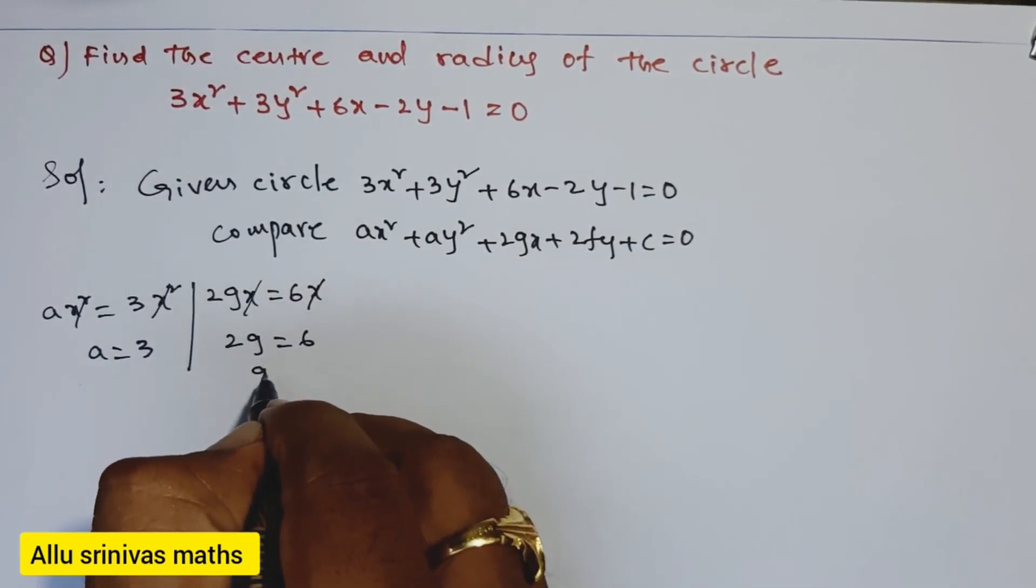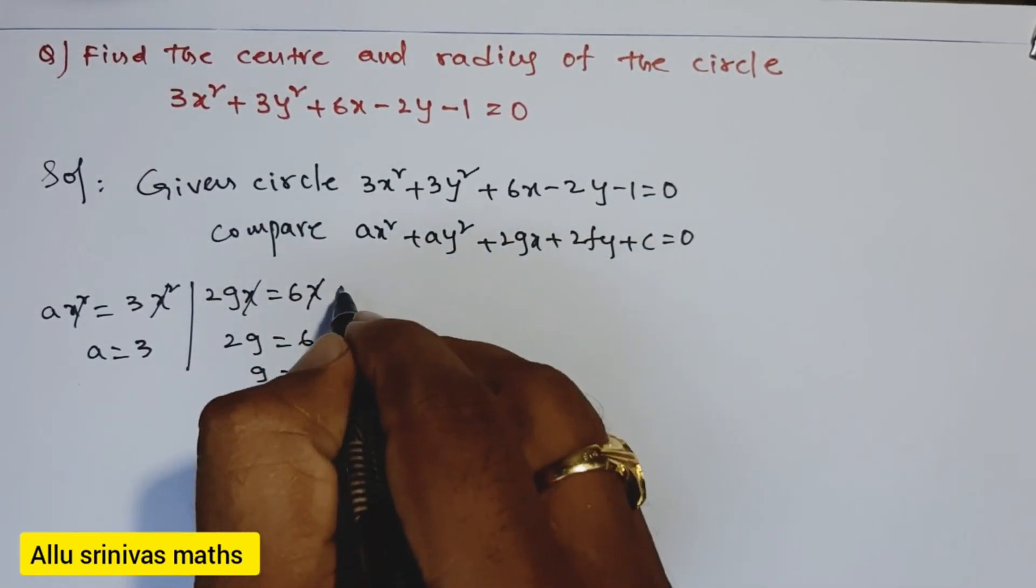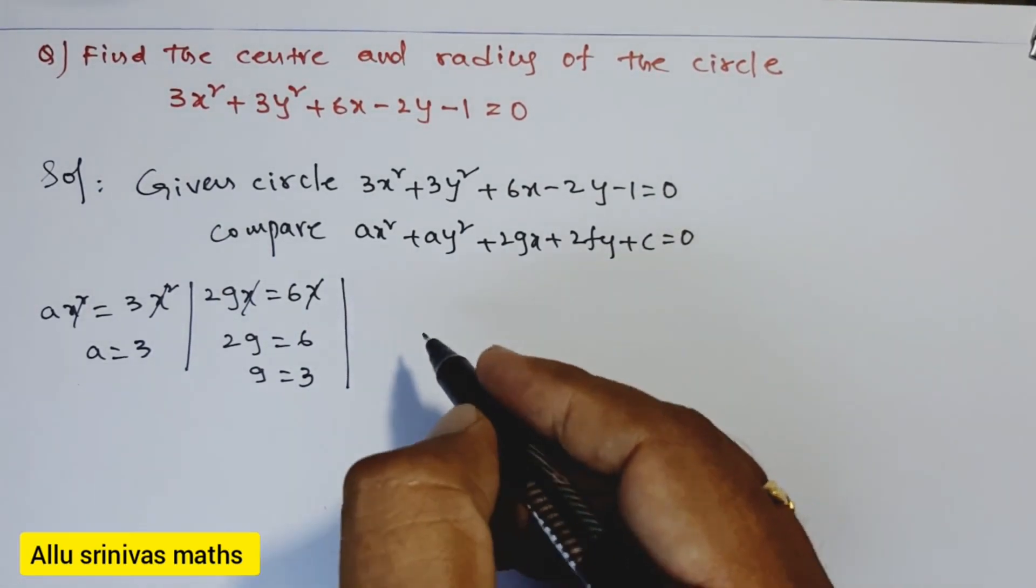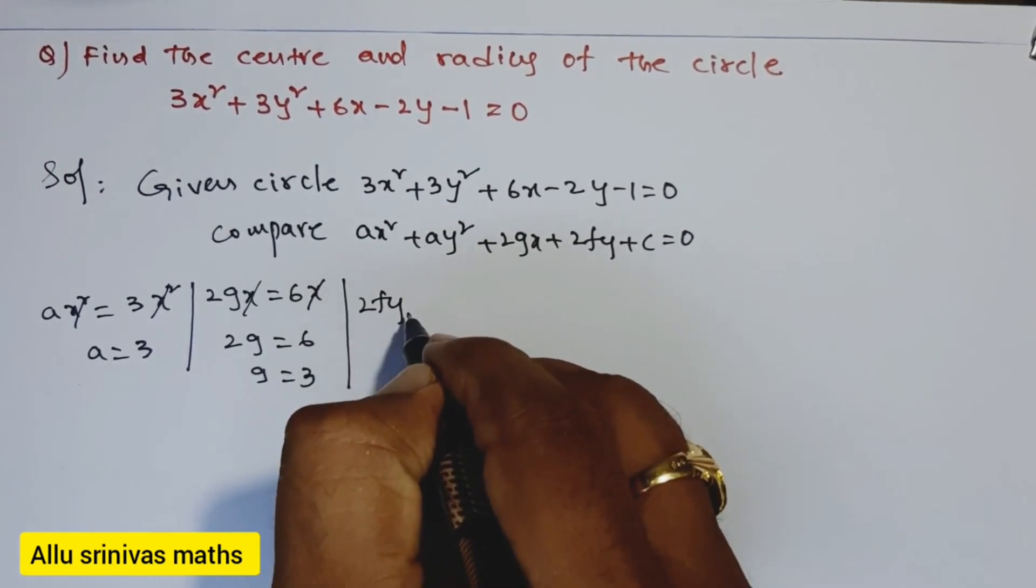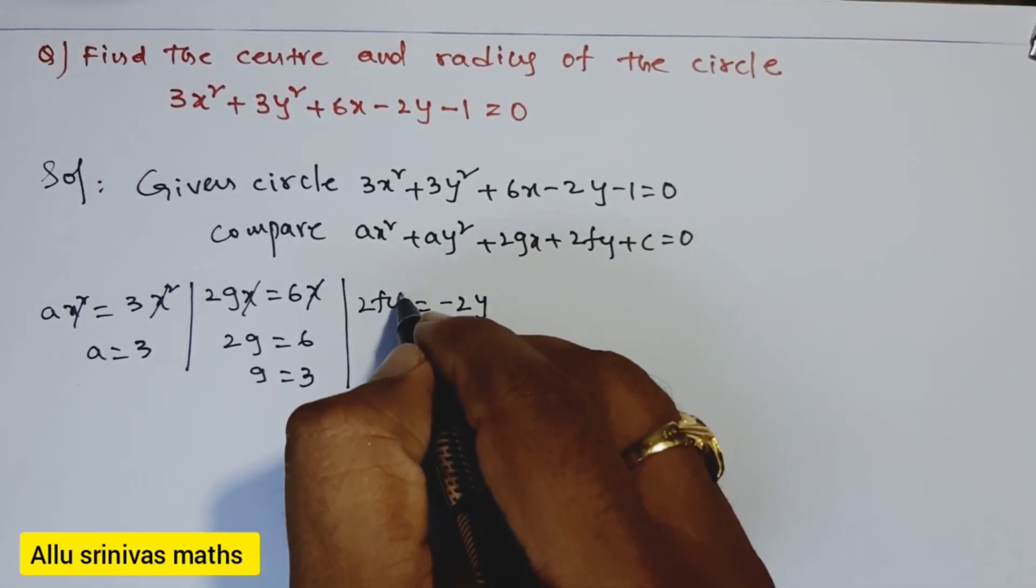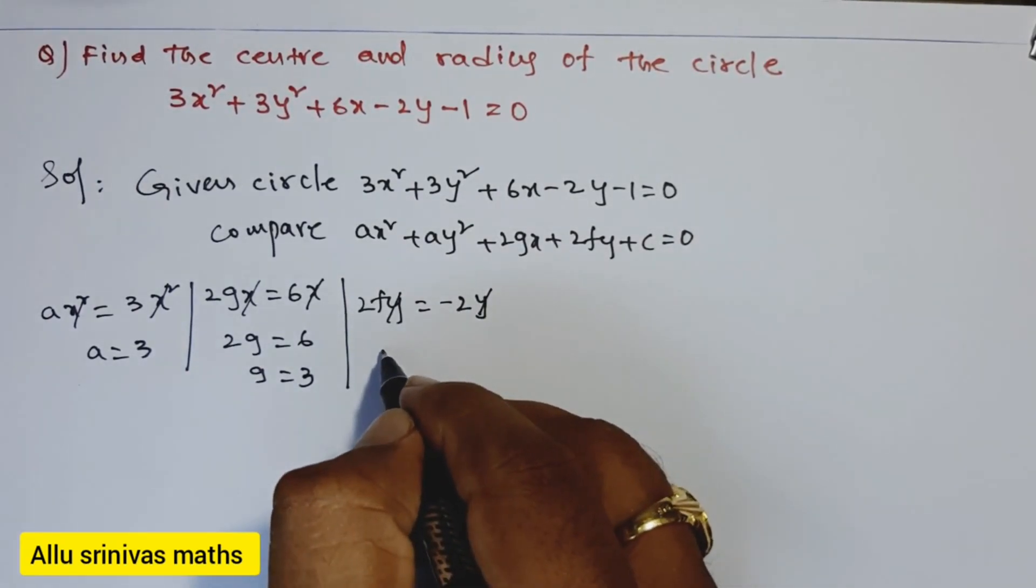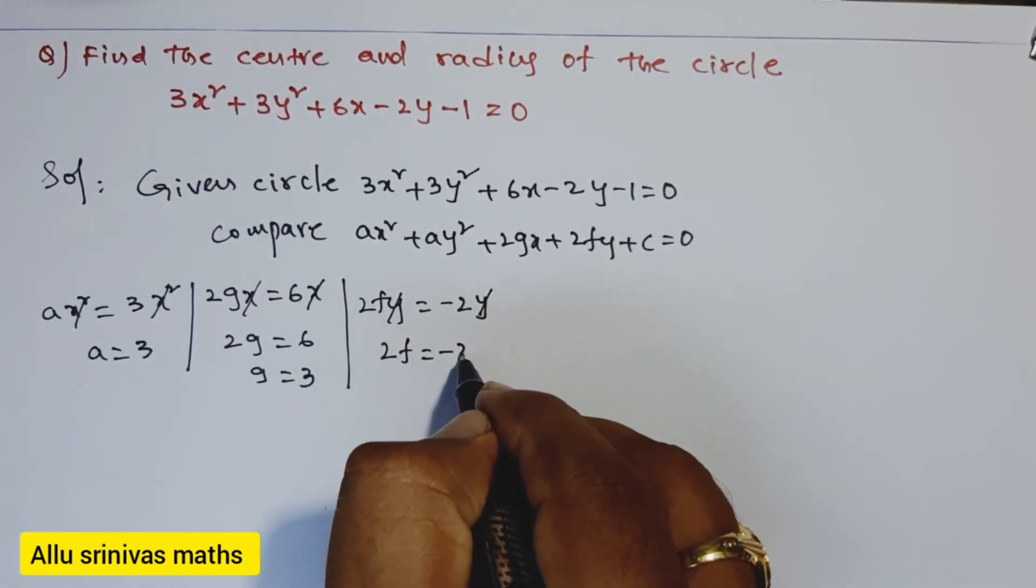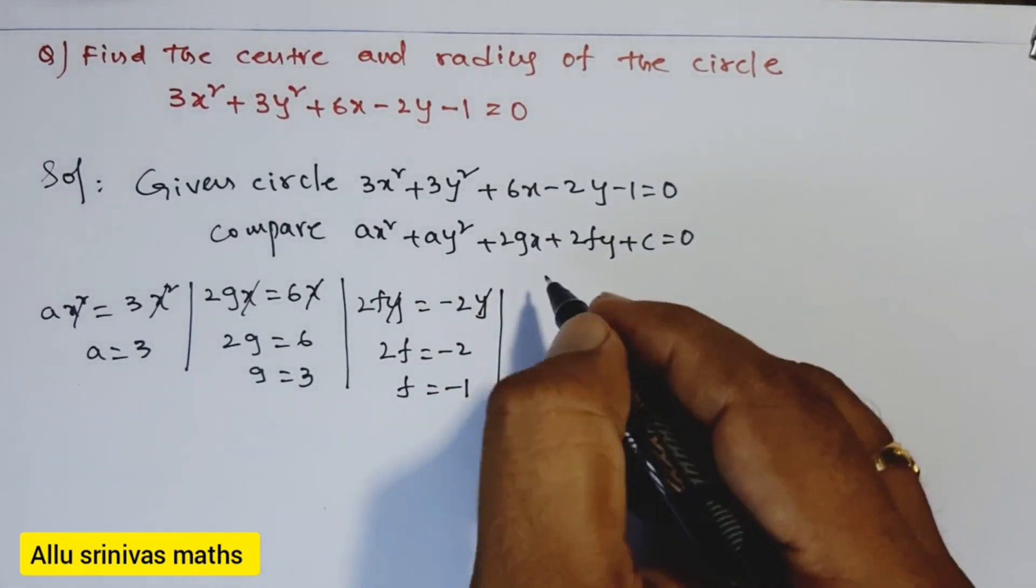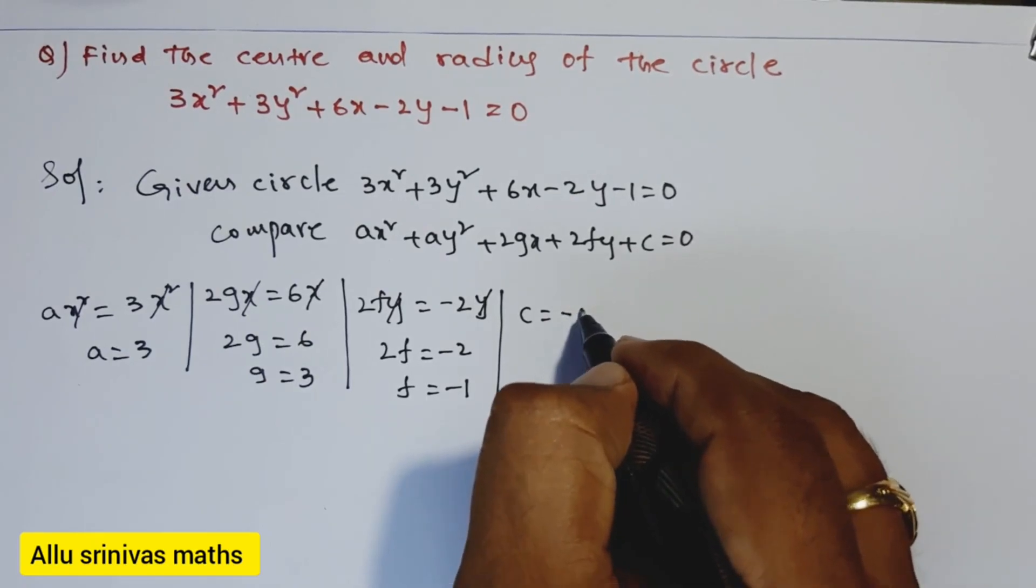Then we compare the y terms in both circles: 2fy = -2y. Both sides, y cancels, so 2f = -2 and f = -1. Let's compare the constant: c = -1, taking the sign of the term.